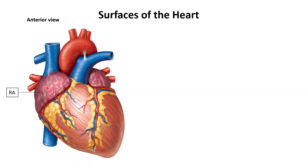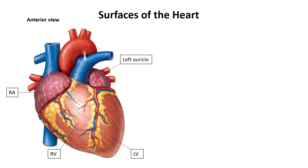This part right here would be the right atrium. This part here is the right ventricle. This part here is the left ventricle. The left and the right ventricle are divided by this groove in the middle called the interventricular groove, and this part right here is the left atrium — specifically, the left auricle of the left atrium.